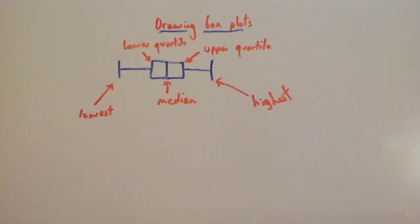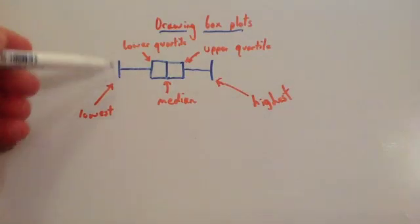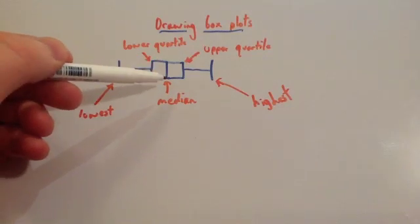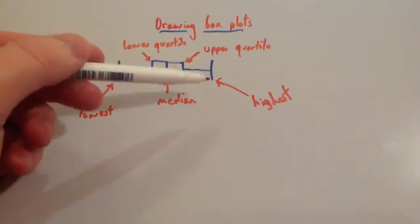A box plot shows five different pieces of information: it shows the lowest value, the lower quartile, the median, the upper quartile, and the highest value.